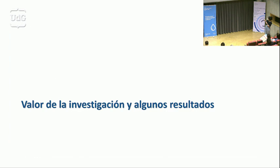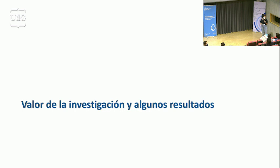Para esto estamos haciendo una combinación entre el análisis de datos históricos disponibles, como el caudal, la precipitación, la temperatura y el uso del suelo, y un muestreo mensual en 23 puntos distribuidos a lo largo de la cuenca, en el que se toman medidas de variables hidrológicas, nutrientes, aniones y cationes, y también de productores primarios y su diversidad. Adicionalmente, para caracterizar mejor la relación entre el río y el acuífero, hemos instalado seis piezómetros y tres puntos de medida continua del caudal.